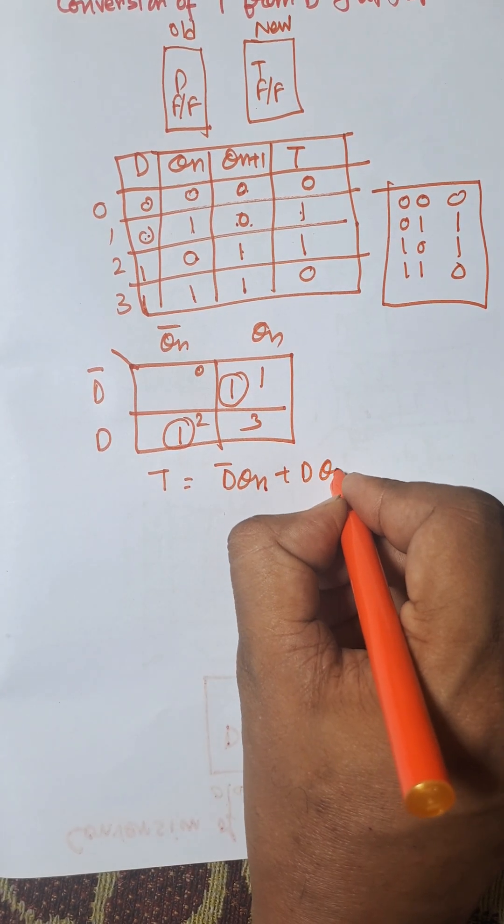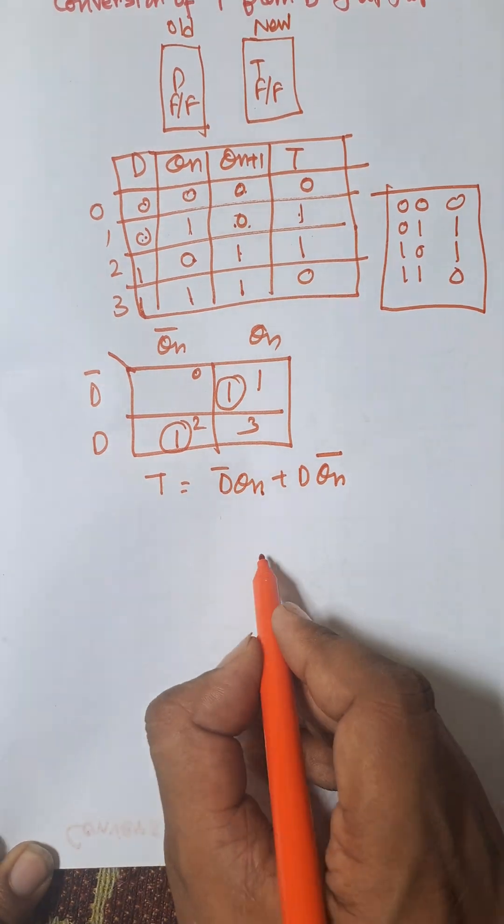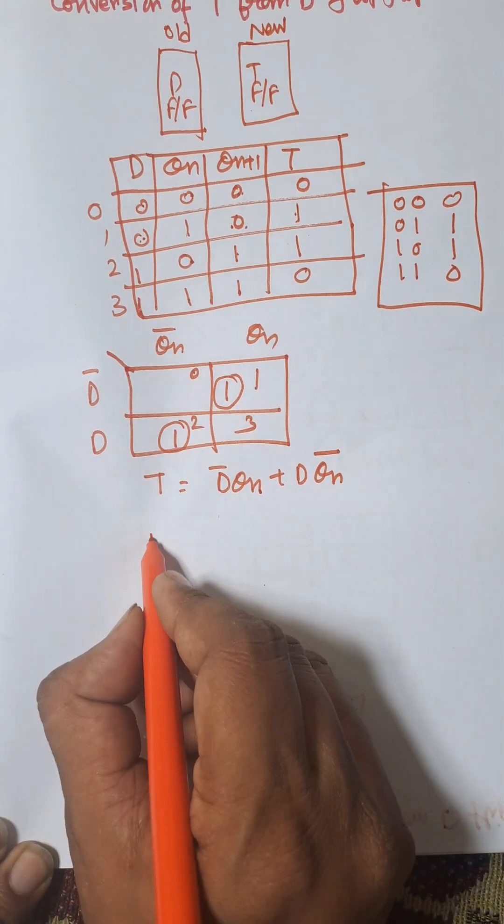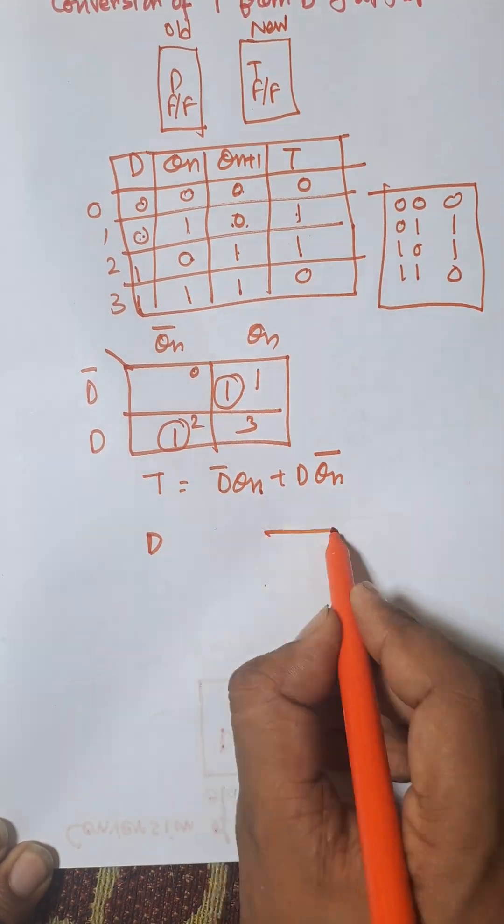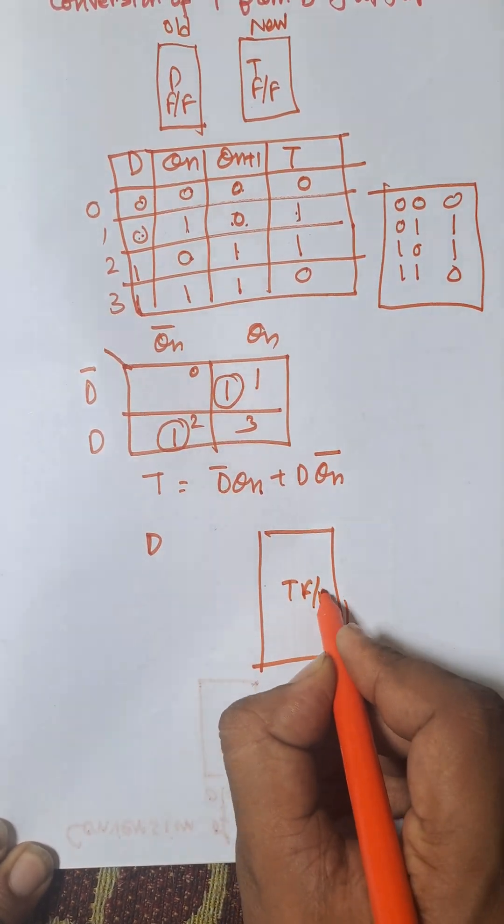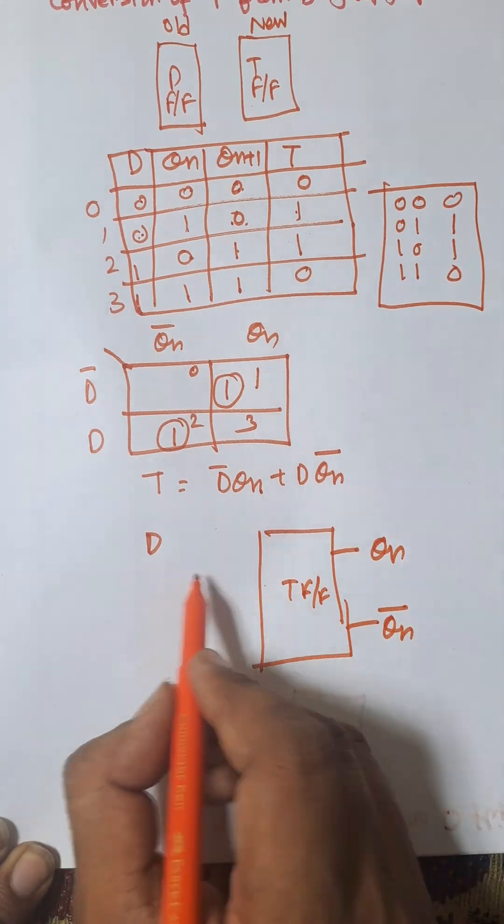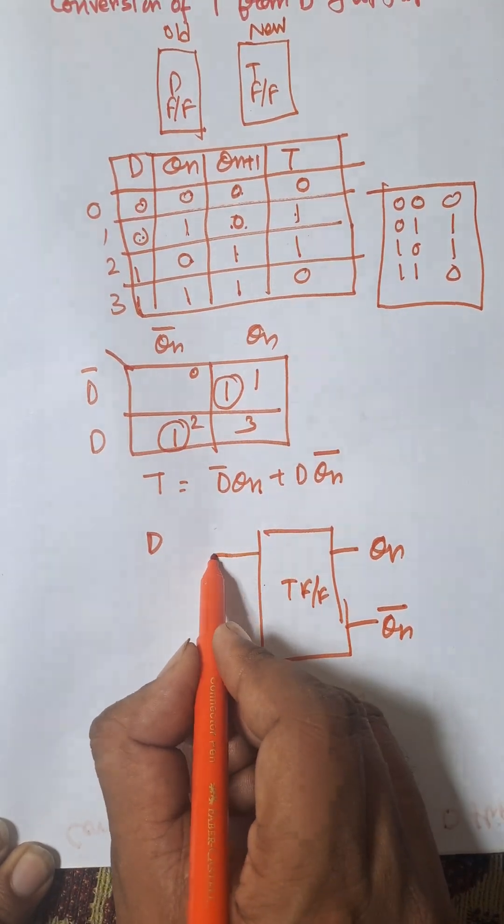Finally, we need to construct the circuit diagram. This is the D input, this is the T flip-flop, this one is Qn and this one is Qn bar, and this is the T input.